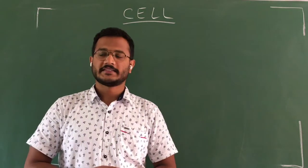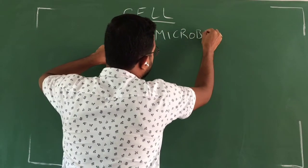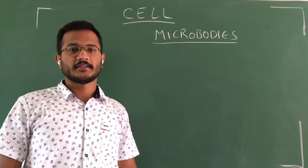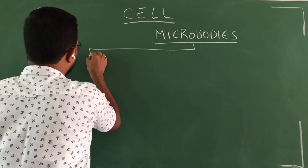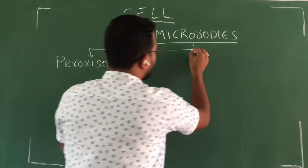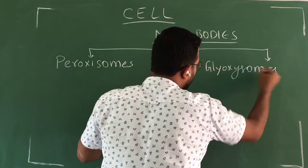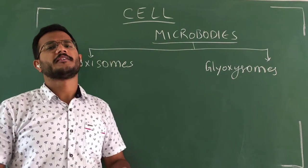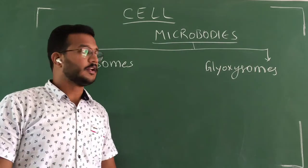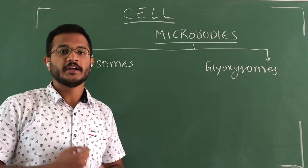Welcome back. In this video we will discuss the remaining cell organelles, those are called microbodies. These are single membrane-bound cell organelles. The two important ones are peroxisomes and glyoxysomes. These two are different in their functions and both play important and specialized roles in cells. We will see their functions and in which organisms they are present.